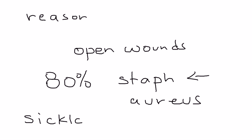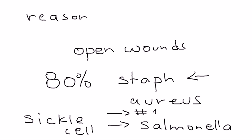When you have osteomyelitis in patients with sickle cell, they tend to be infected with Salmonella. But here's an important tidbit: even in sickle cell patients, the number one pathogen is Staph aureus, with Salmonella being number two.